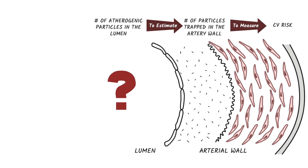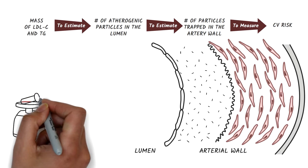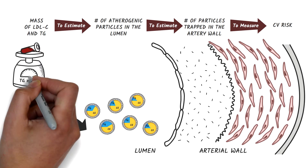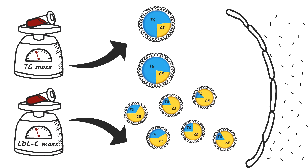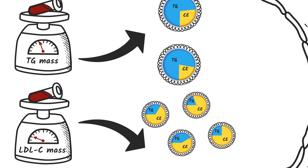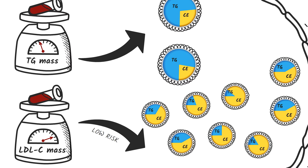How do we estimate the number of atherogenic ApoB particles in the lumen? Typically, we use conventional lipid panels. We use the mass of LDL-C to estimate the number of lipid particles and the mass of triglycerides to estimate the number of VLDL particles. So if the mass of LDL-C is low, we assume there's a low number of LDL particles and a low cardiovascular risk. And if the mass of LDL-C is high, we assume there's a high number of LDL particles and a high cardiovascular risk. And we do the same thing with triglycerides and VLDL particles.